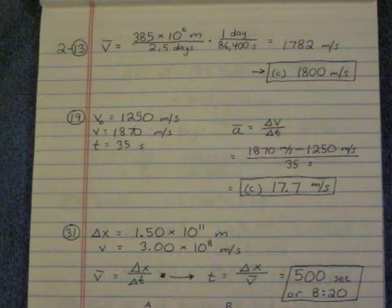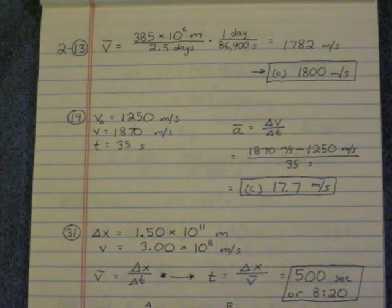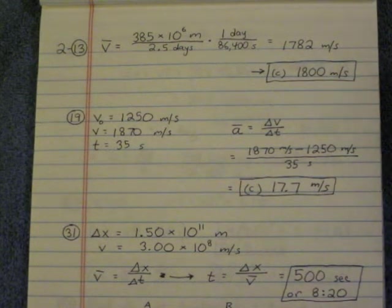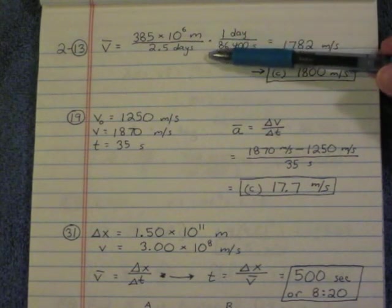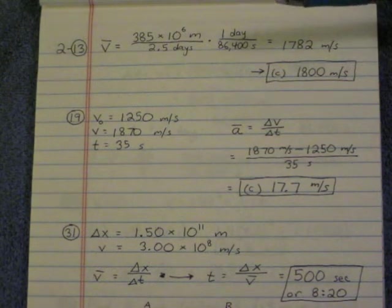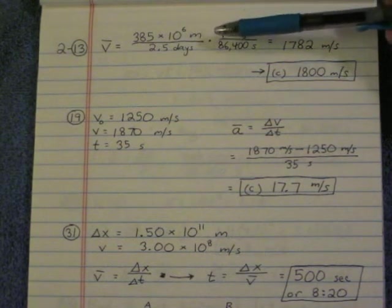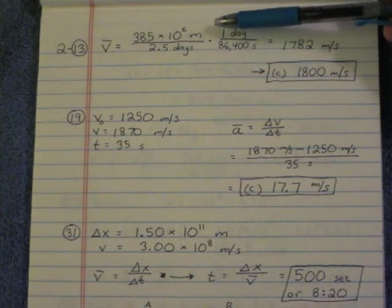We start with number 13. This is regarding a trip from the Earth to the Moon. It asks for what the average speed for the trip is. So average speed is the distance divided by the time. Now we need to get this in meters per second. So there it is in meters, 385,